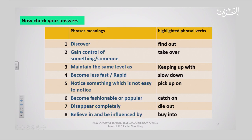These are the answers for the phrasal verbs. Find out means discover. Take over means gain control of something or someone. Keep up with means maintain the same level as. Slow down means become less fast or rapid. Pick up on means notice something which is not easy to notice. Catch on means become fashionable or popular. Die out means disappear completely. And buy into means believe in and be influenced by.